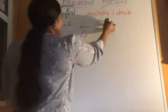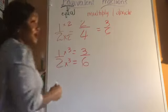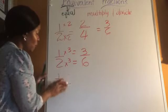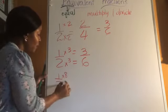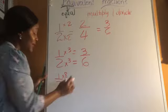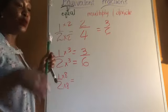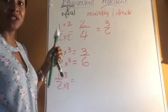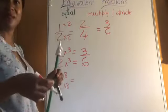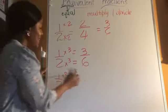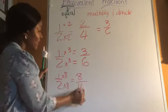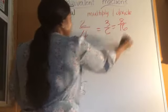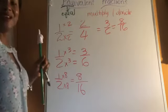What if you feel smart and want to use a bigger number? No problem. Just remember, if you're not good with your times tables, multiply by smaller numbers. But eight times one is eight, and eight times two is 16 — it also means that eight sixteenths is equal to a half.